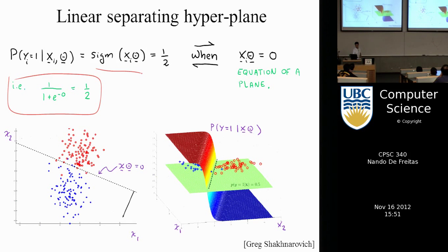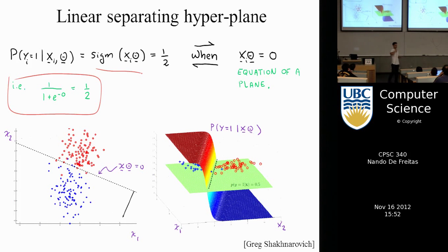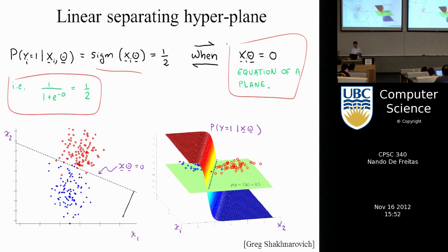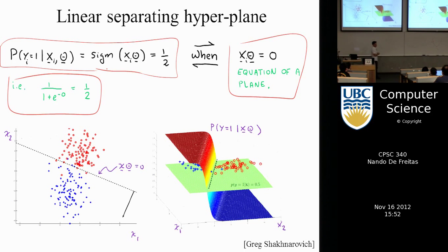We interpret the output of the sigmoid as the probability of y given x and theta — P(y=1 | x_i, theta). This changes the model so we can do binary classification like spam detection. When x_i * theta = 0, the sigmoid equals 1/2. Above a half we classify a data point as, say, cancer; below a half as non-cancer. Each data point (blue or red) represents a patient with two features, say height and weight.